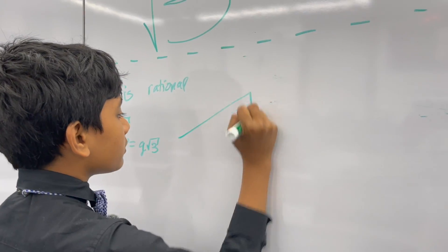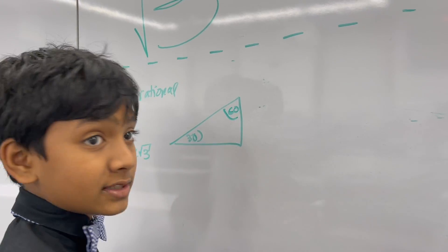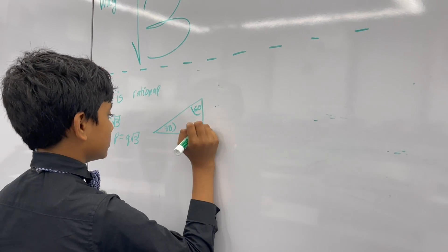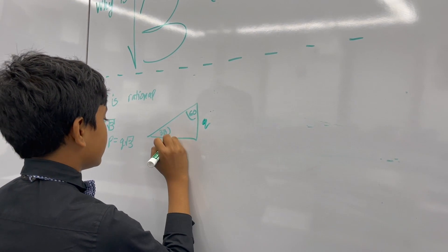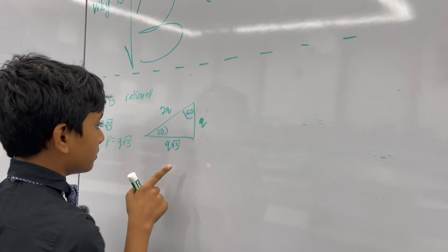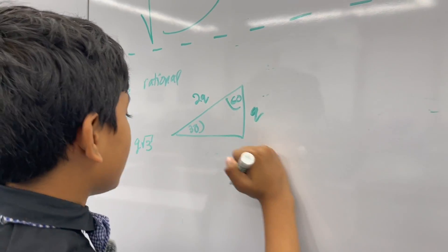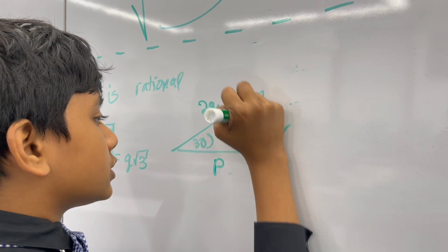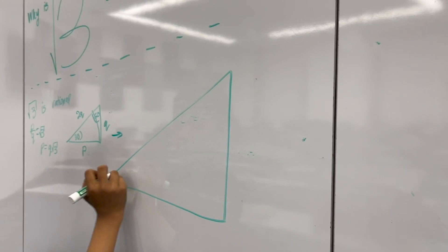Do you remember the proportions of a 30-60-90 triangle? If we call the short side q, then the long side is q√3, and the hypotenuse is 2q. But wait — q√3 is also p. So let's draw this with a circular sector of radius p. Let's make it a bit bigger.